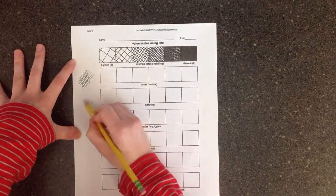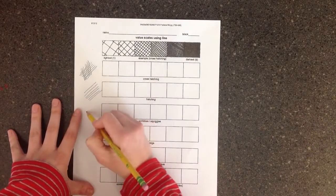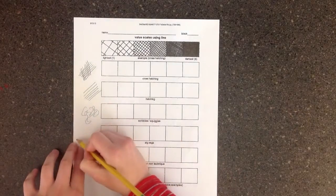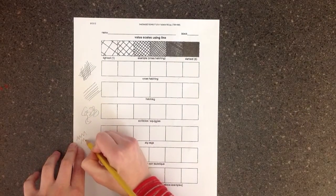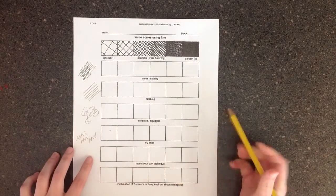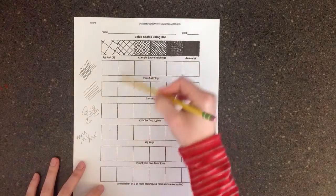Hatching is just lines in one direction. Scribbles is scribbles like you're a little kid. Zigzags, like that. And then the last two will be inventing your own and then combining two of these that you've already done.